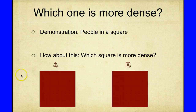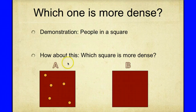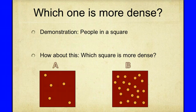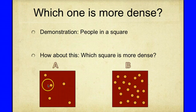A good example to illustrate density is the people-in-a-square demonstration. We have two squares, both with the same volume. Which square is more dense depends on how many people are in the square — we'll use dots to represent people. Square A has about five dots; square B has about four times that amount. Square B is more dense because it has more matter in that given space — the spaces are the same size, but square B has more matter in it.